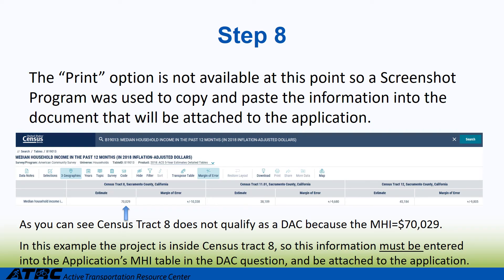Step 8: The print option is not available at this point, so a screenshot program was used to copy and paste the information into the document that will be attached to the application. As you can see, census tract 8 does not qualify as a DAC because the median household income is $70,029. Since the project is inside tract 8, this information must be entered into the application's median household income table in the DAC question and attached to the application.